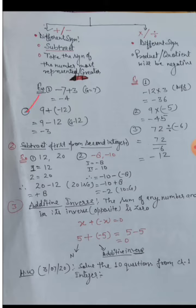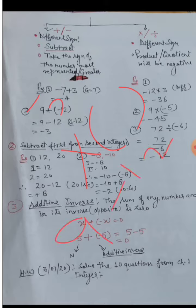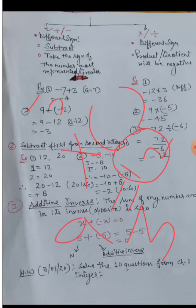Next question: nine plus bracket minus 12. Opening the bracket — bracket means multiplication — plus times minus gives minus. So we get nine minus twelve. Different signs, subtract the numbers: twelve minus nine equals three. Twelve is greater and has a minus sign, so the answer is minus three.